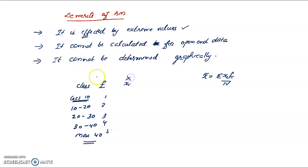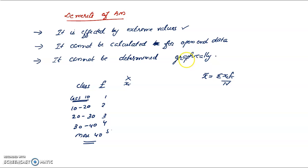Since there is no middle value for open-end classes, the arithmetic mean cannot be determined. A further demerit is that it cannot be determined by a graph.